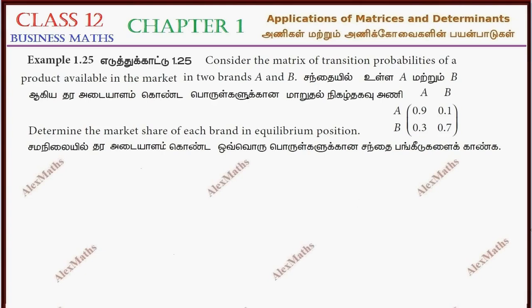Hi students, this is Alex here. Example 1.25. Consider the matrix of transition probabilities of a product available in the market with two brands, A and B. Here we have a transition probability matrix. Determine the market share of each brand in the equilibrium position.